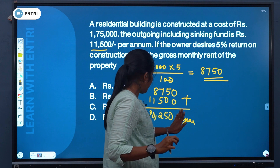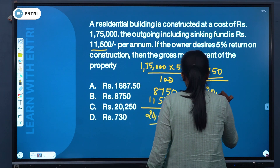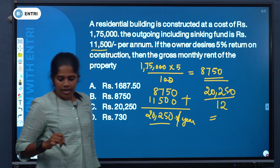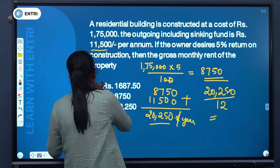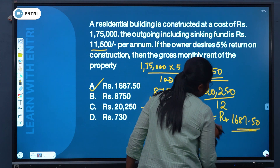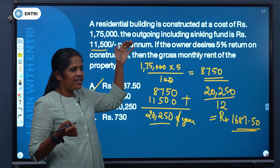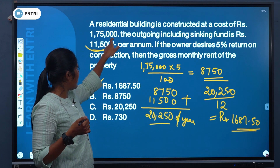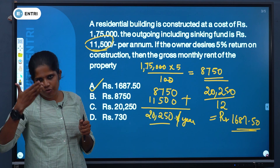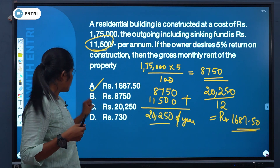The total annual income required is Rs. 20,250. Dividing by 12 to get the monthly rent, we get Rs. 1,687.50. So Option B is your correct answer. The cost of construction is Rs. 1,75,000 and total amount is Rs. 20,250 giving monthly rent of Rs. 1,687.50.